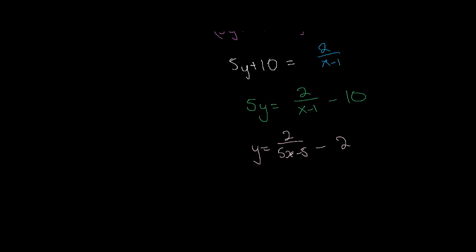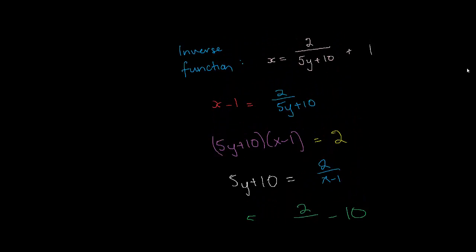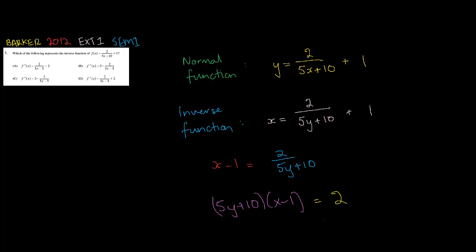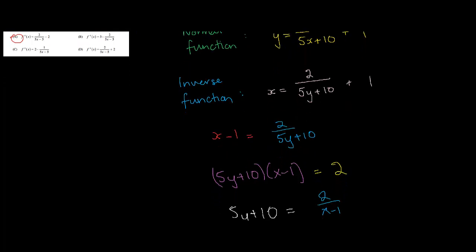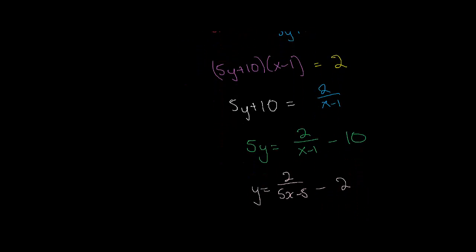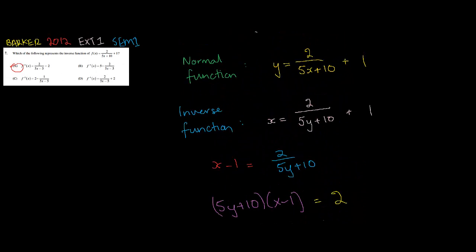So this is the inverse function. So it's 2 over 5x minus 5 and then minus 2. Let's see which one of those works out with. I think A. So 2 over 5x minus 5 minus 2. So that's the answer, 7 is A.